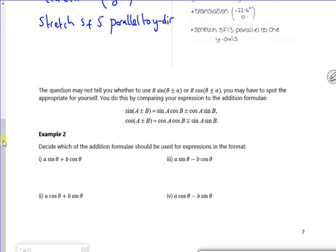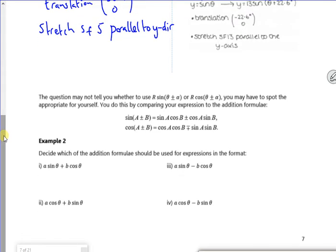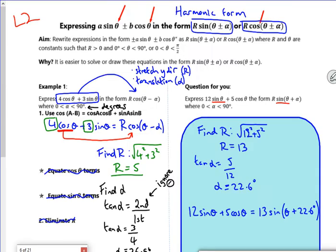So this says sometimes they'll tell you which one to put it in. Like on the previous example on the switchback page, it told us that the 4 cos theta plus 3 sin theta is r cos theta with a minus, and the 12 sin theta and 5 cos theta is r sin theta with a plus.